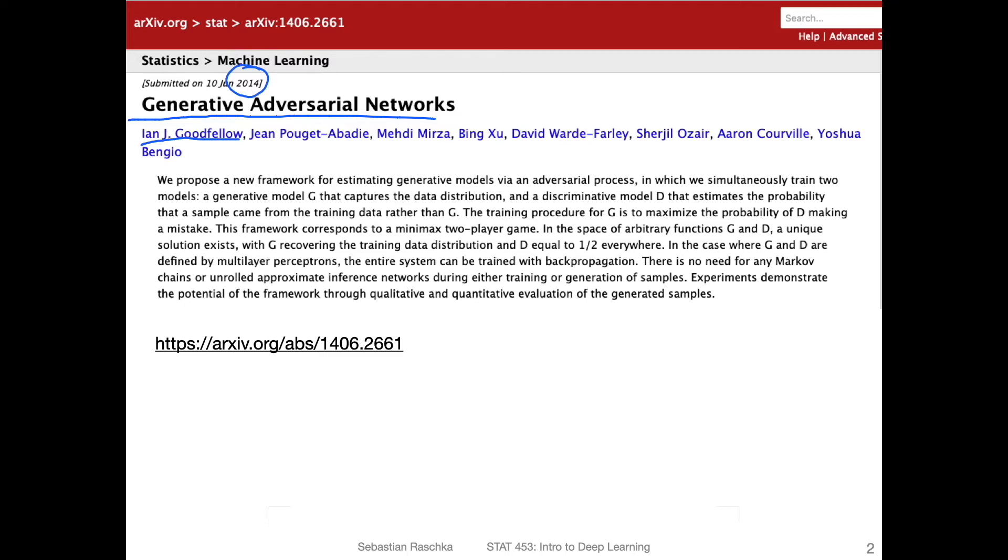It became really popular around 2016, I would say, when there was a famous NIPS workshop where other generative adversarial networks were discussed and presented extensively. So since then there have been literally hundreds, if not thousands of different generative adversarial networks. There was actually a GitHub repository listing different types of generative adversarial networks, and back then, like three years ago, there were approximately 150 different types. It was not updated since then unfortunately, but I bet there are nowadays probably up to 1000 different generative adversarial networks.